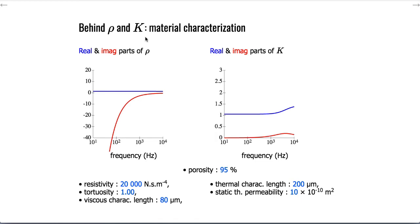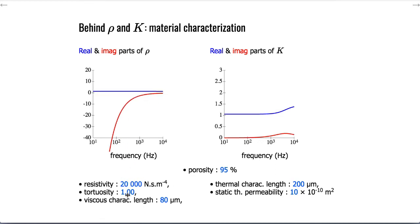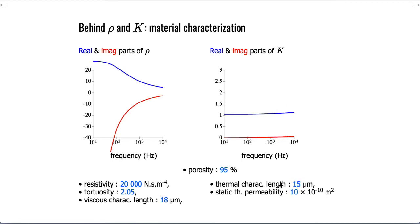The motivation behind estimating these two quantities is material characterization. For example, we can plot the real and imaginary parts of the dynamic mass density and the dynamic bulk modulus, computed from a set of six parameters of the Johnson-Champouillard-Lafarge model. Changing the left-side parameters only changes the dynamic mass density, while changing the right-side parameters only changes the dynamic bulk modulus — only the porosity value affects both.